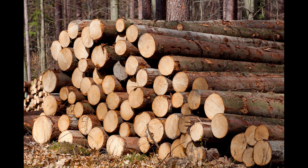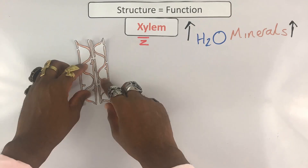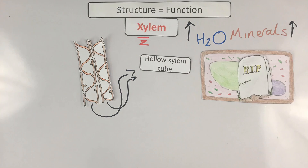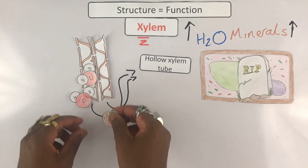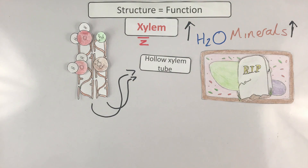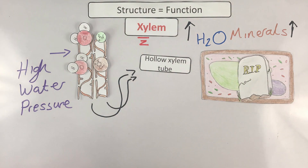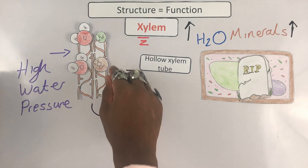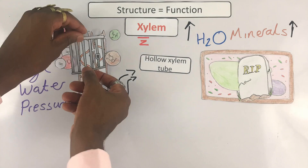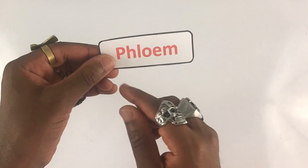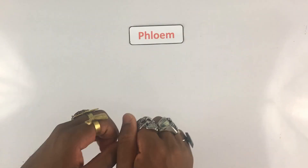We've got two main adaptations here. The first are these hollow xylem tubes — these used to be regular plant cells but died and hollowed out so that water and minerals can easily move through them. As the water moves through these xylem tubes, a lot of water pressure can build up, so the next adaptation are these rings of lignin, which make the xylem strong enough to withstand that pressure.